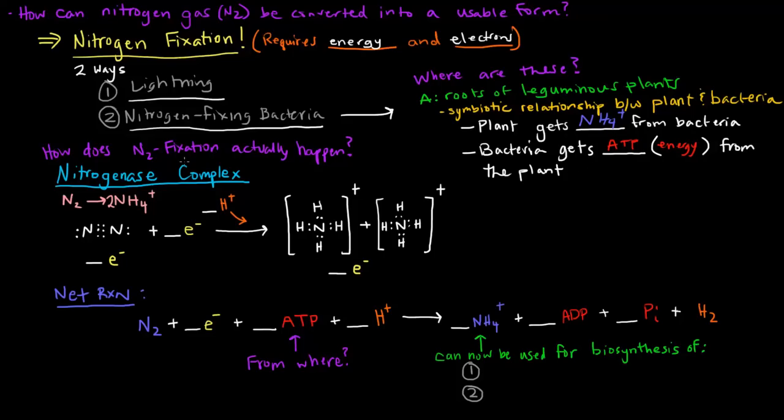How does the actual nitrogen fixation happen? There's this complex of enzymes called the nitrogenase complex. What the nitrogenase complex simply does is it takes gaseous nitrogen and turns it into ammonium ion. Initially, we have gaseous nitrogen, and that has one, two, three, four, five pairs of electrons for a total of 10 electrons.